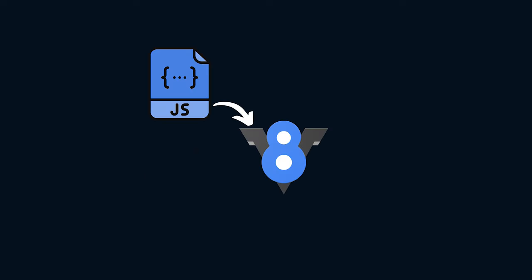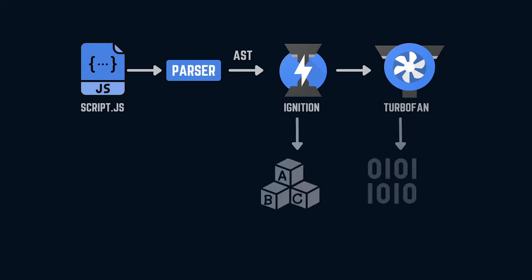Now let's look at what is happening behind the scene when you run a JavaScript file within the popular JavaScript engine V8, which is found in Chrome web browsers and in Node.js applications. Though there are other JavaScript engines, once you understand how V8 works you can easily compare its working with others. Let's get started.